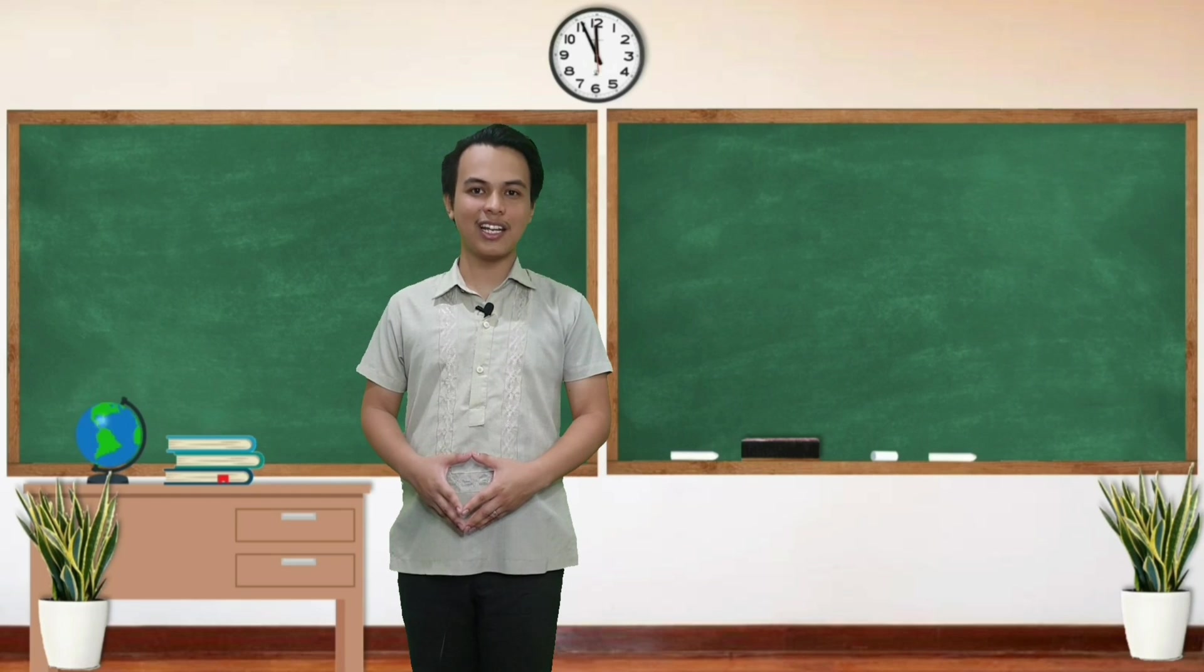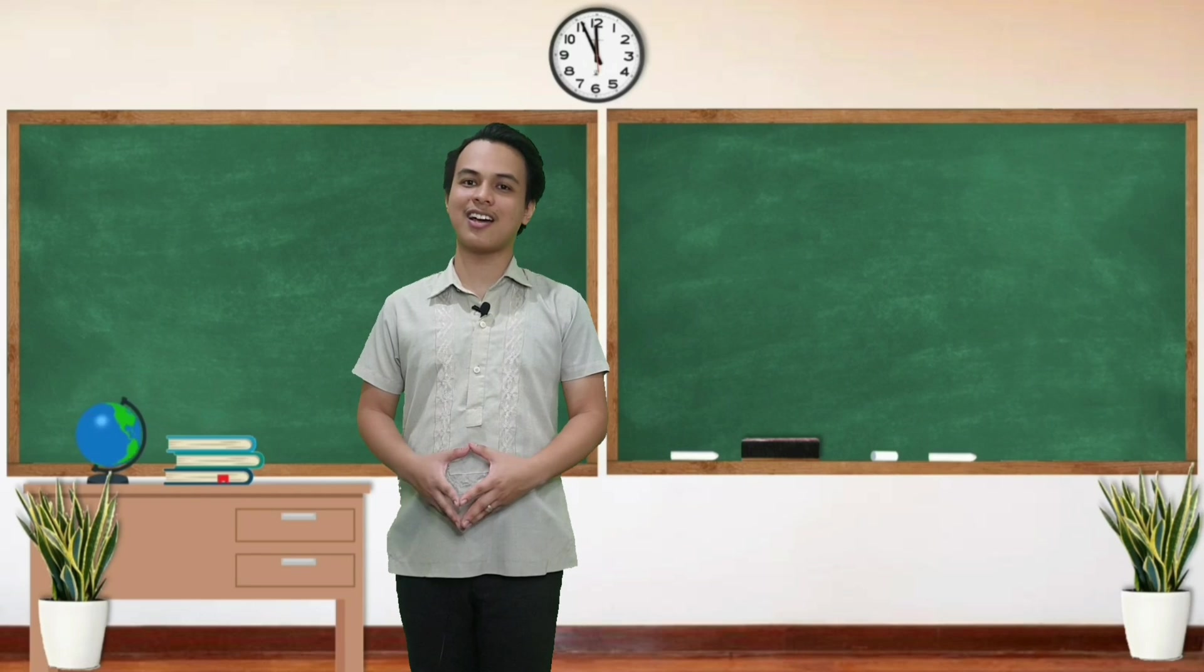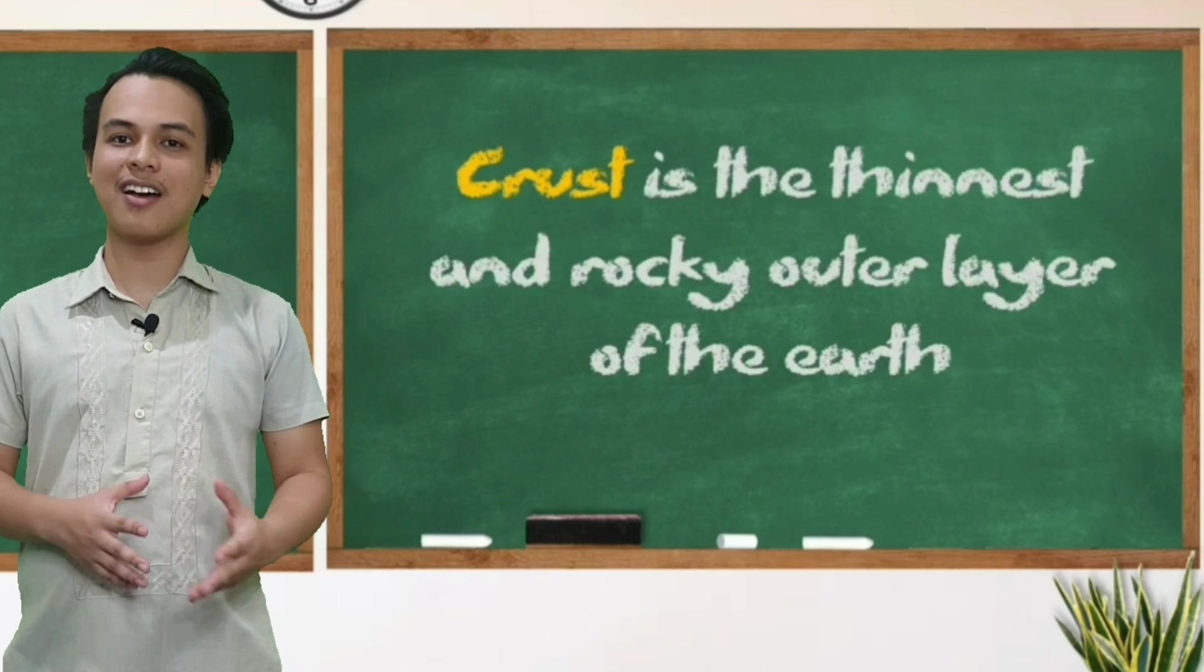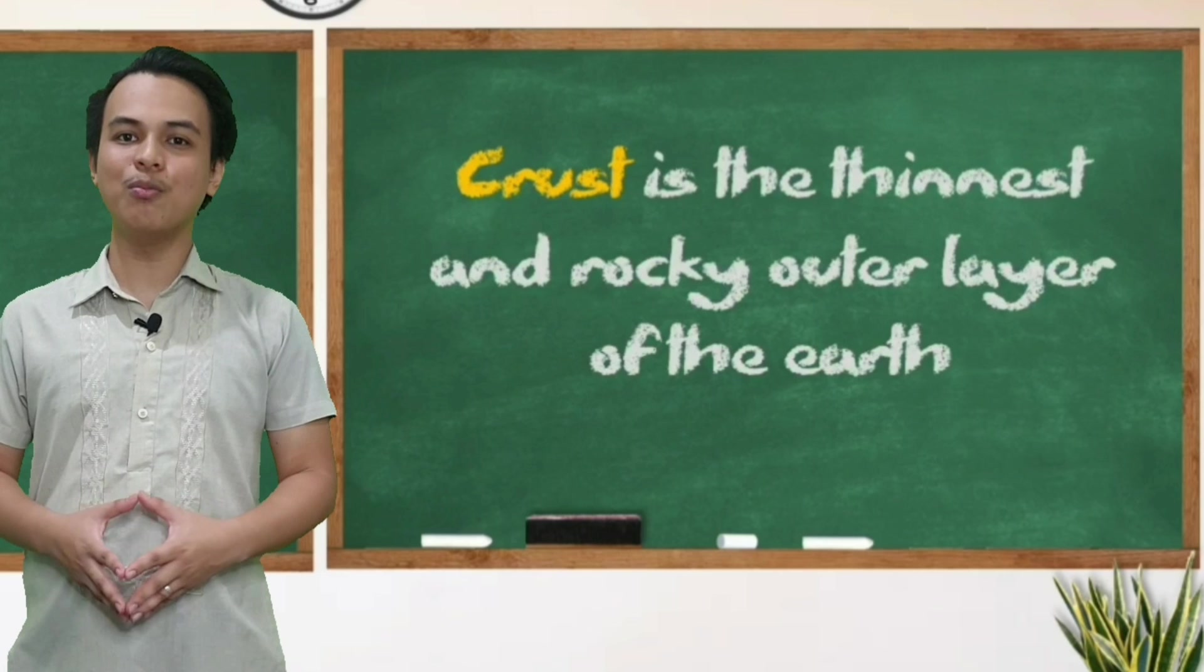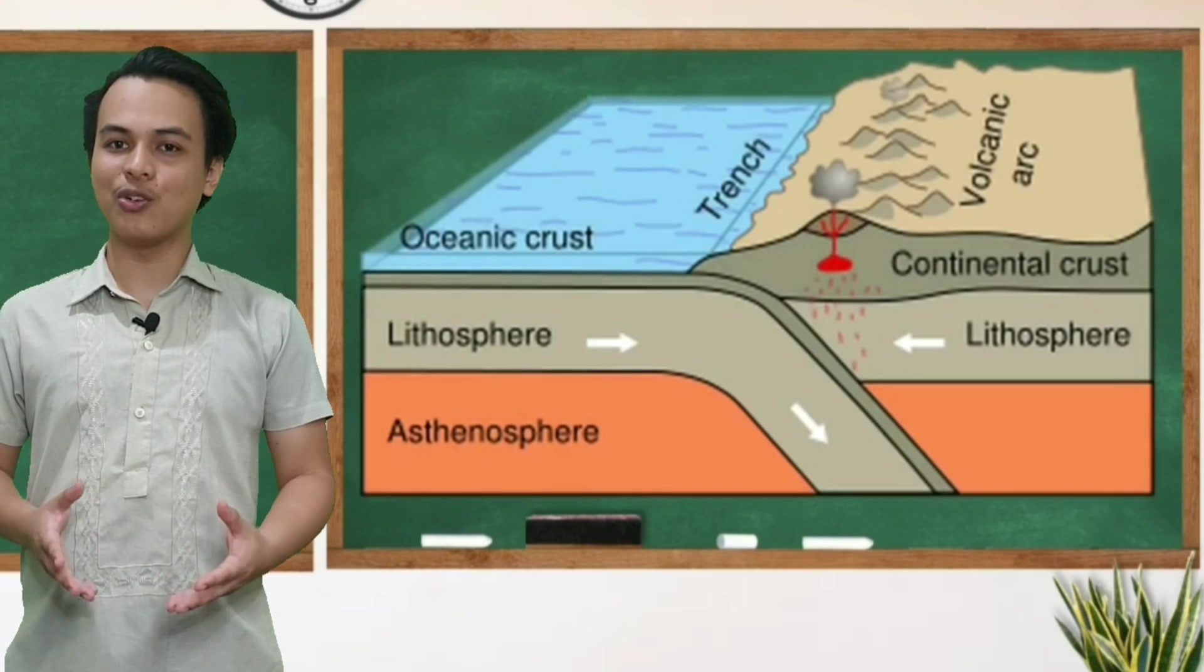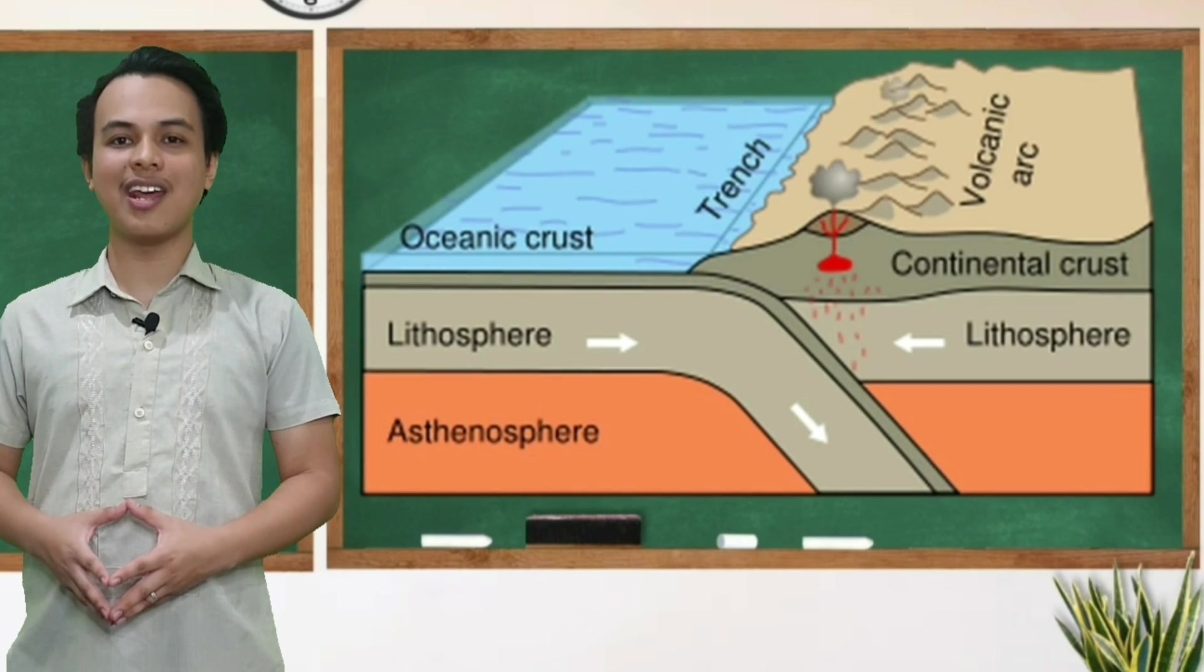Ang susunod na concentric layer na ating i-didiscuss ay ang crust. Ang crust ay ang thinnest, outermost, rocky layer of the earth na binubuo ng dalawang bahagi, ang oceanic crust at ang continental crust.